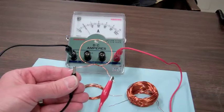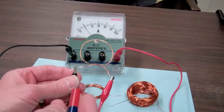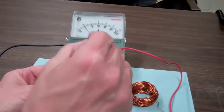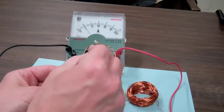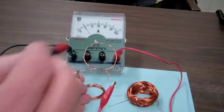I now have the single loop coil connected to the ammeter and I am going to move the bar magnet into and out of the coil. If you watch very closely, you can see a slight deflection of the ammeter needle.